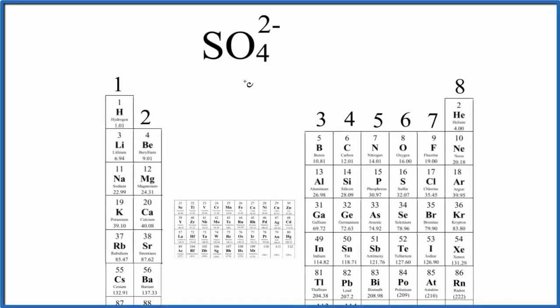Let's find the number of valence electrons for SO4 2-. This is the sulfate ion. It's a polyatomic ion.